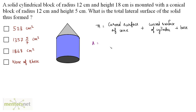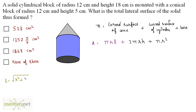The formula is: π r L (curved surface area of cone) + 2π r H (curved surface area of cylinder) + π r² (base area), where H is the height of the cylinder and L is the slant height of the cone. The radius is the same for both. We need to calculate L: L = √(r² + h²) = √(12² + 5²) = √(144 + 25) = √169 = 13 centimeters.